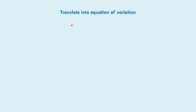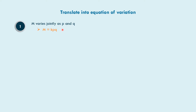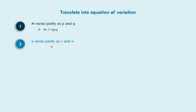Let us translate into an equation of variation. In example number one, m varies jointly as p and q, so m is equal to k times p times q. In example number two, x varies jointly as b and w, so x is equal to k times v times w.